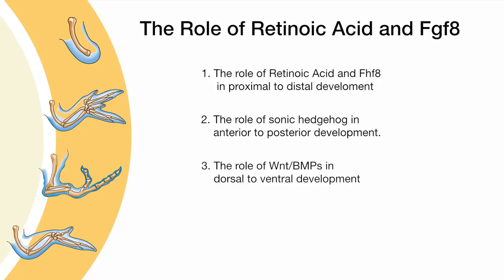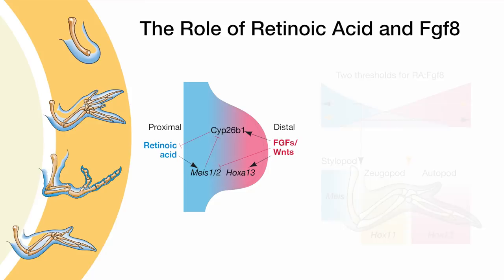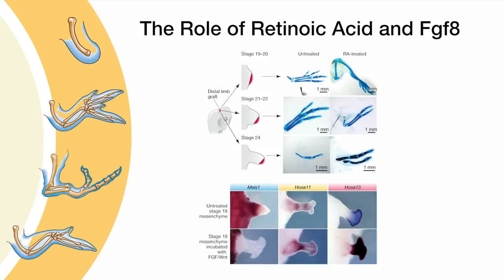As the limb bud grows, cell fates along the proximal to distal axis are predominantly influenced by a proximal source of retinoic acid from the trunk and the opposing distal-most expression of FGF8 from the apical ectodermal ridge. The model posits that these opposing antagonistic signals establish two critical thresholds of specification resulting in differential Hox gene expression. Two independent groups showed in a topical limb grafting paradigm that administering retinoic acid was capable of promoting more proximal cell identities, while adding FGF fostered only more distal Hox gene expression.